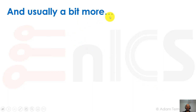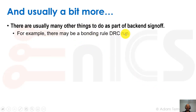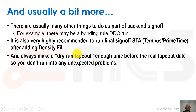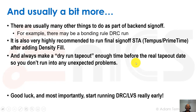There are usually additional checks needed, such as a bonding rule DRC run. It is highly recommended to run final sign-off static timing analysis with a tool like Tempus or PrimeTime after adding density fill, because the added metal fillers cause coupling capacitance that could affect timing. Always do a dry run tape out well before the real tape out date, send the foundry or VCA your dry run GDS, get their feedback with enough time to address issues. And most importantly, start running DRC and LVS early so you know about problems ahead of time.